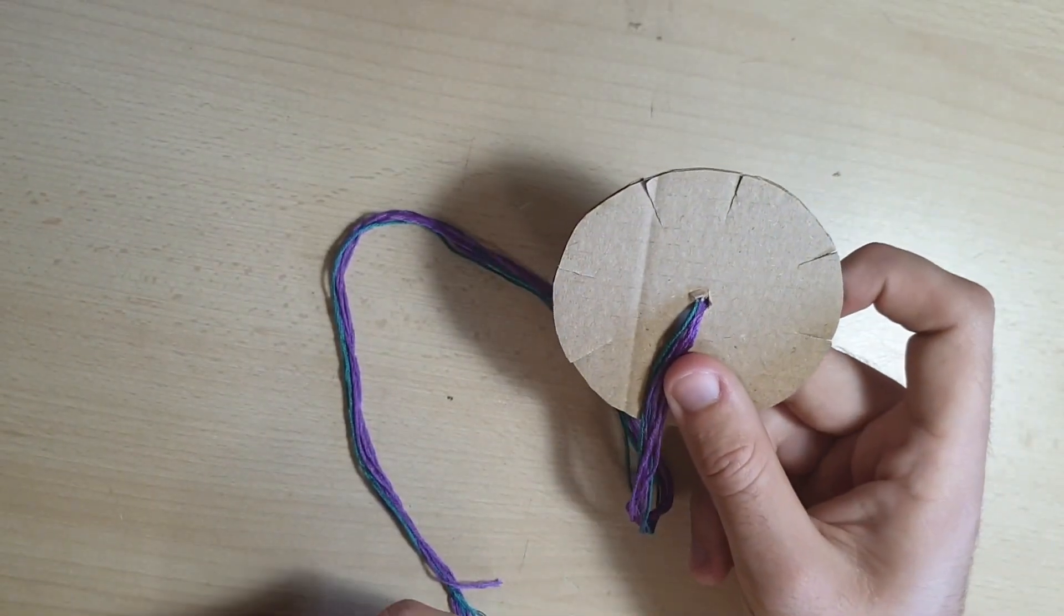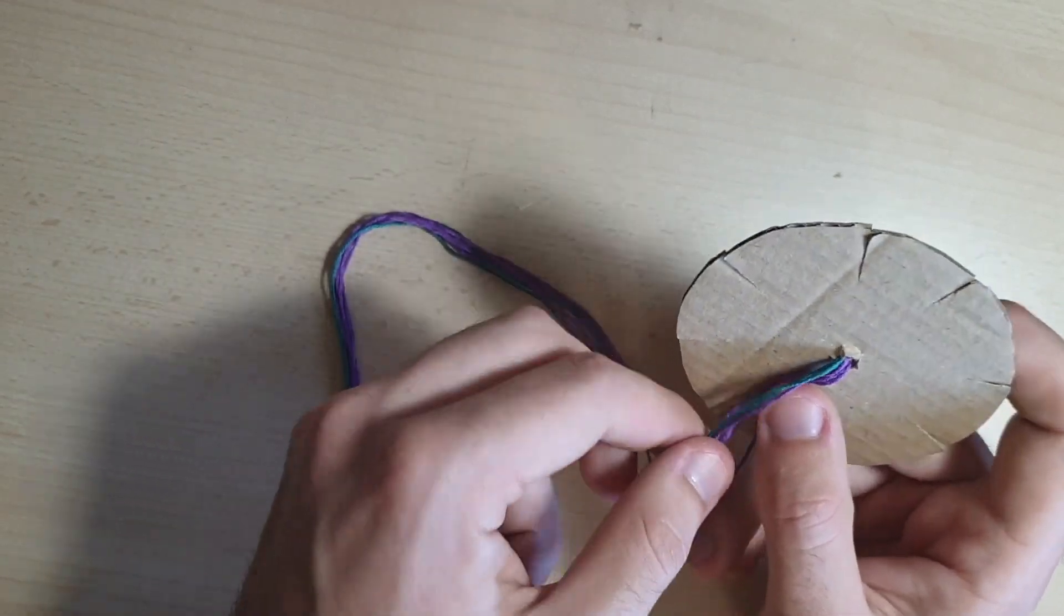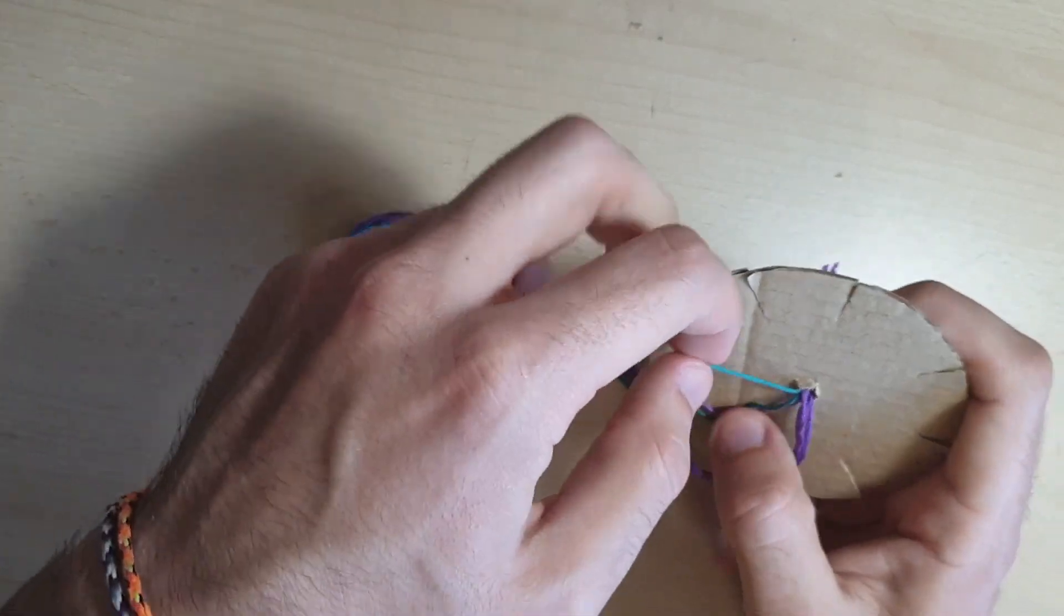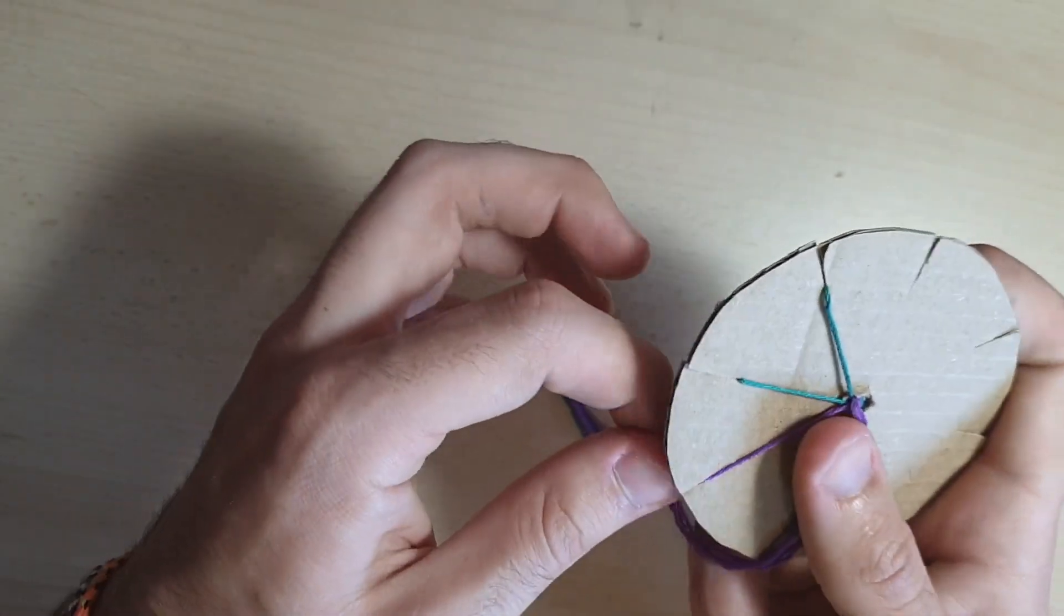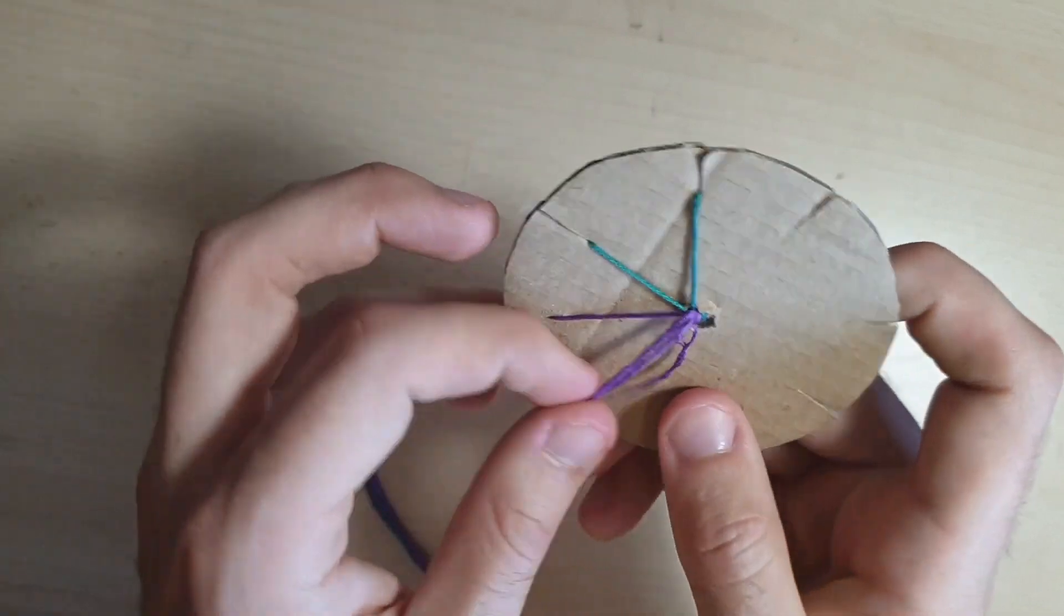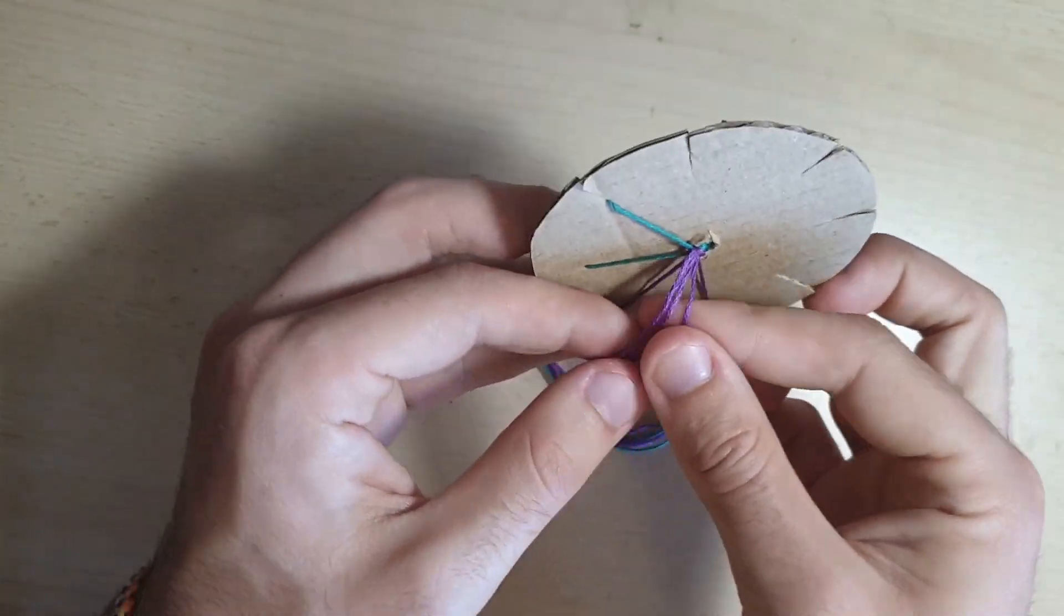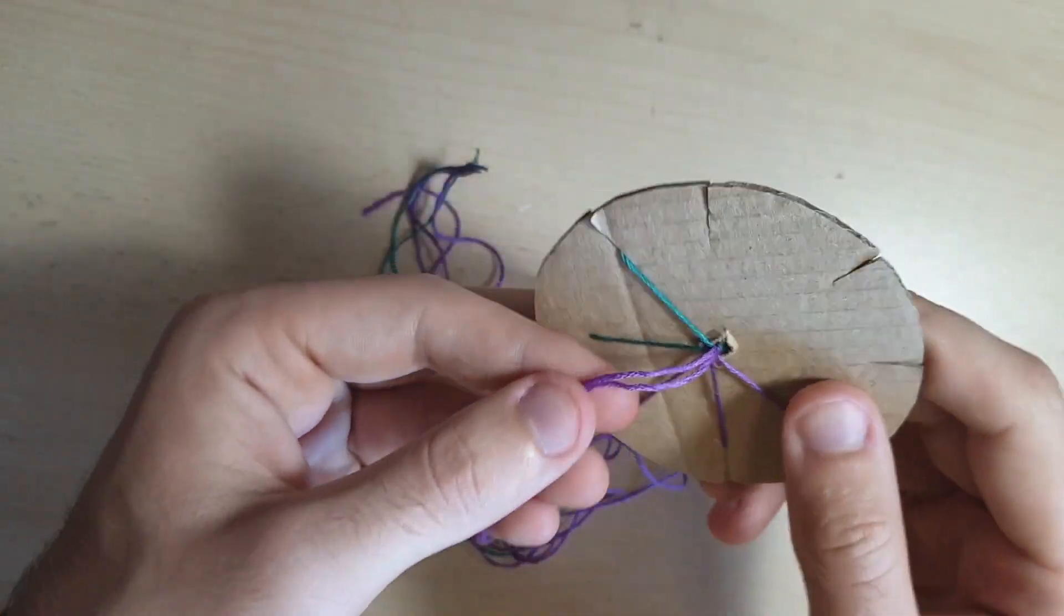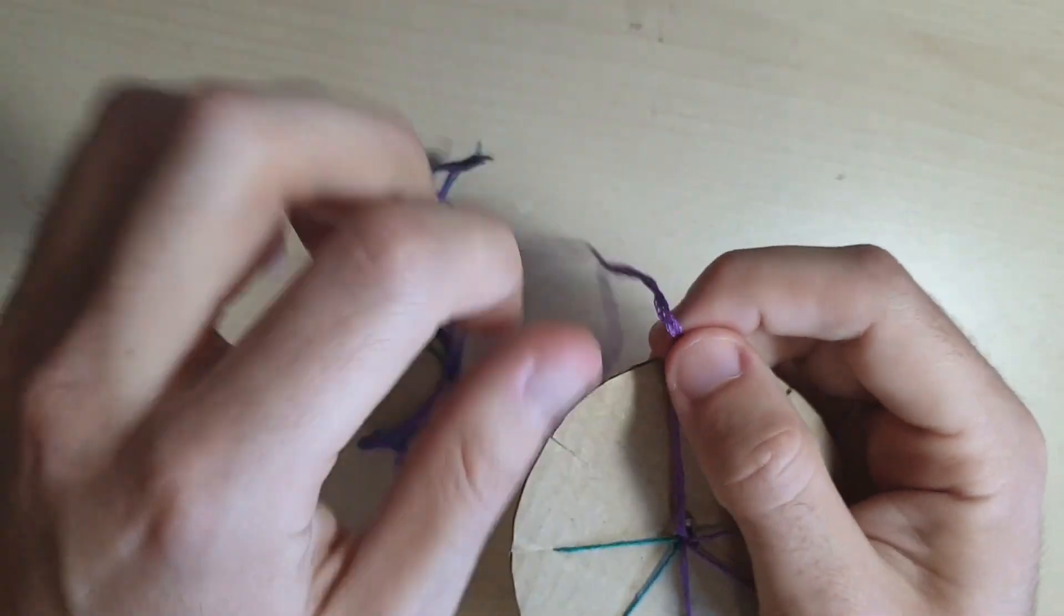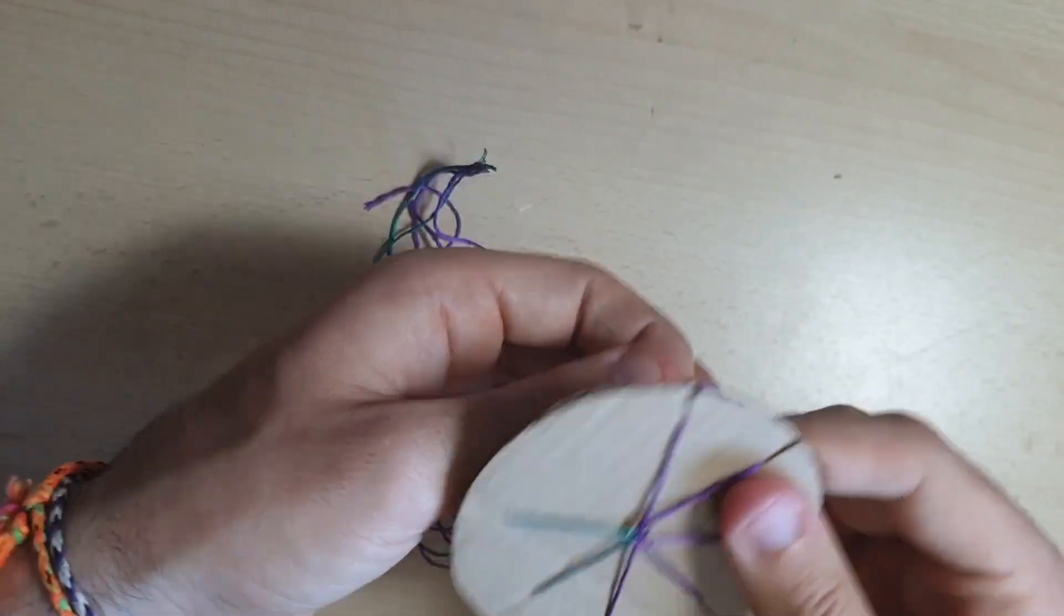Then you get each strand of this friendship bracelet string and you put it into one of the slots on the loom. It's not hugely important which slot which colour goes into. You just need to get every strand into a slot of its own, like so.